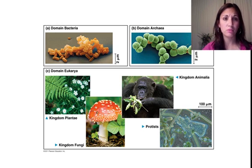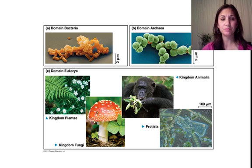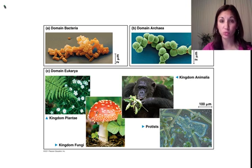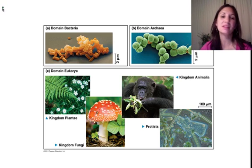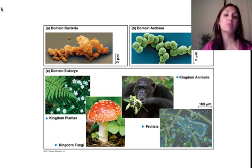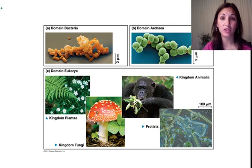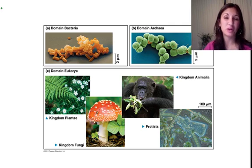Continuing on with chapter one, we want to talk about the different domains of life. We organize life — it's a natural tendency for us to want to do this, something you've been doing since you were a very small child. It's how we make sense of the world around us. We try to put things into different categories. For a long time, we divided things into two categories: animal and vegetable. Sometimes we also threw mineral in there, but that was considered non-living.